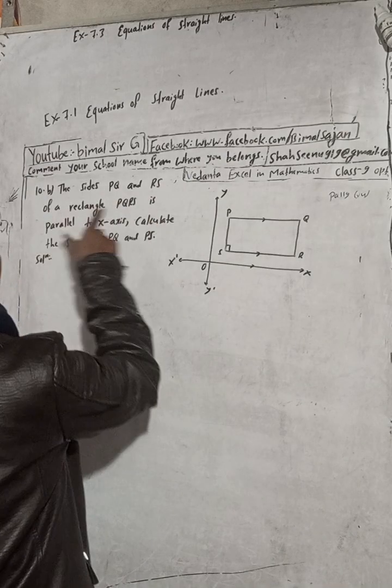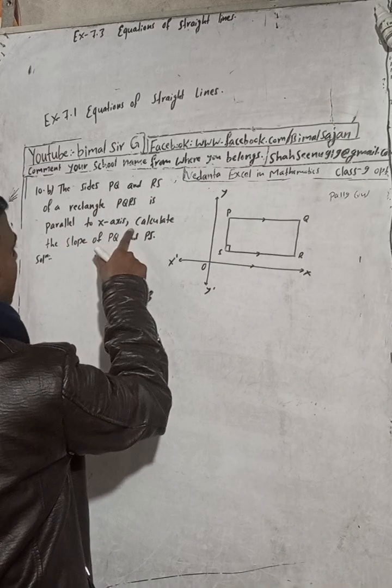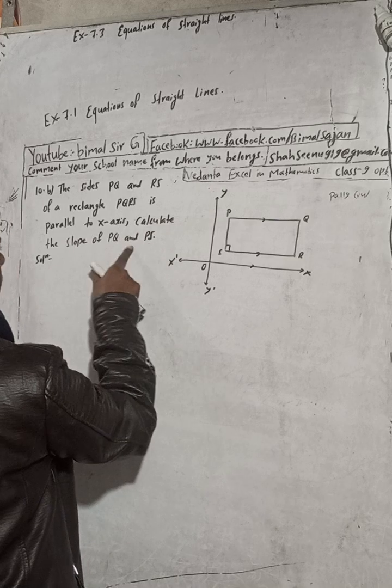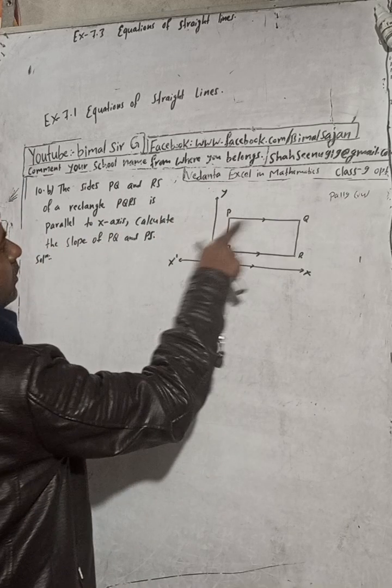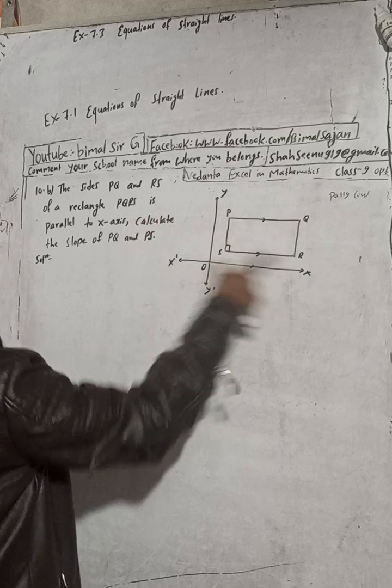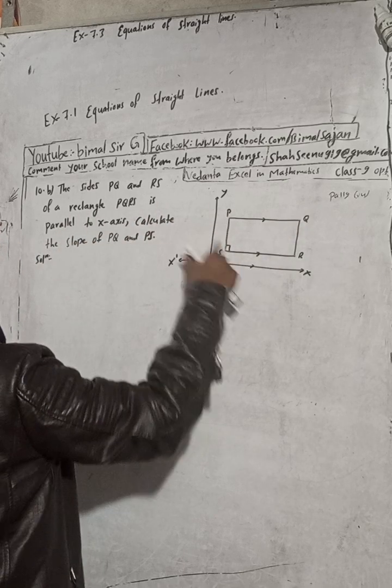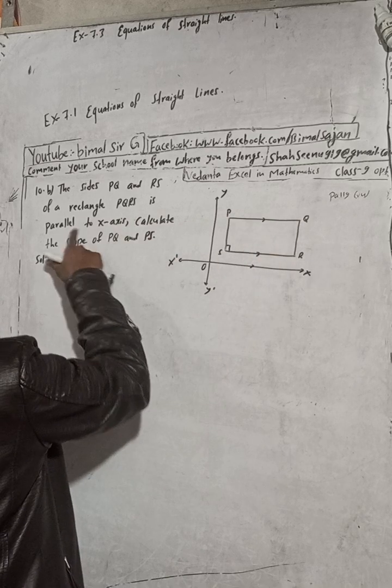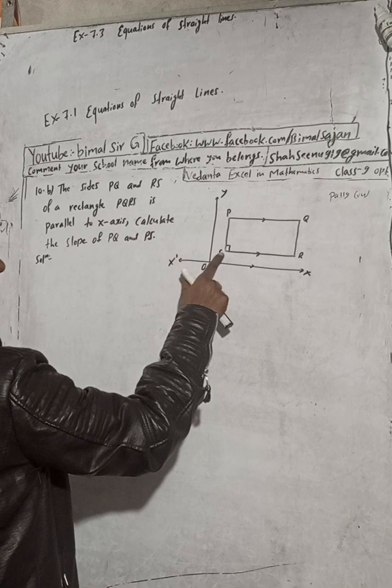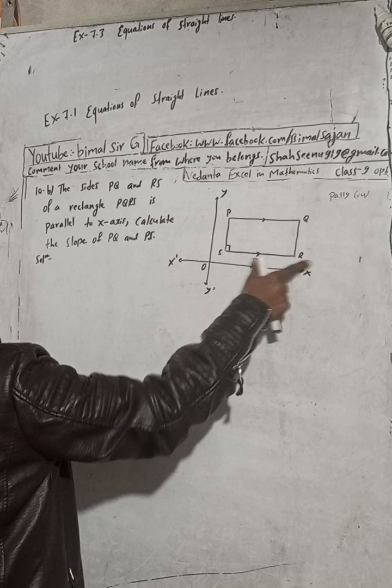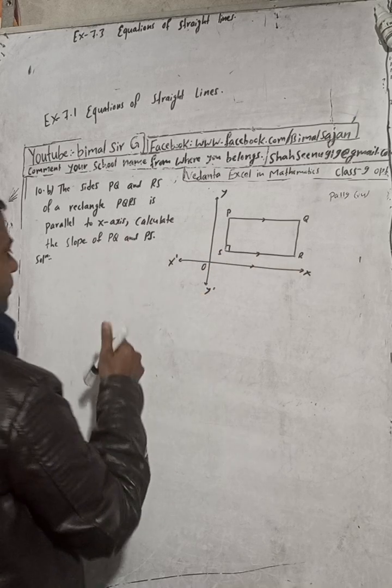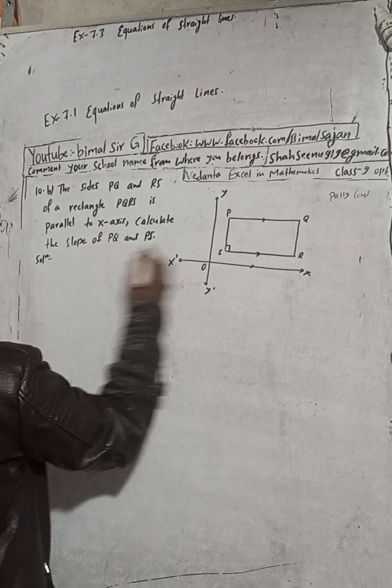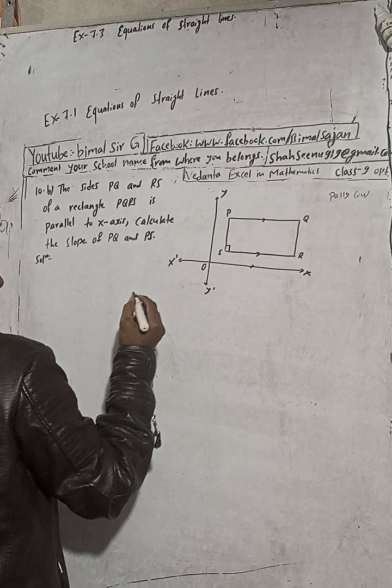Sides PQ and RS of a rectangle PQRS is parallel to x axis. Calculate the slope of PQ and RS. So this is PQ and RS of a rectangle PQRS, parallel to x axis. So here slope of PQ. What is slope of PQ?